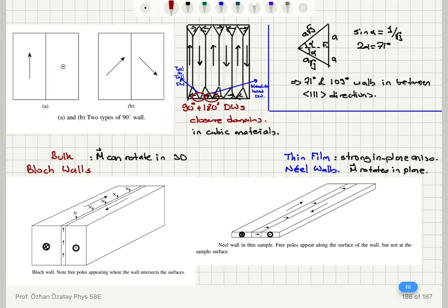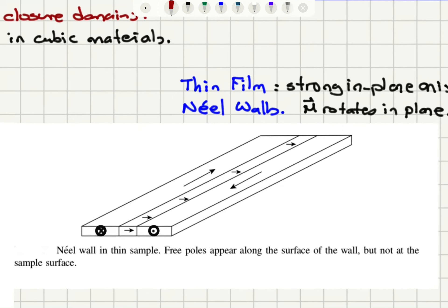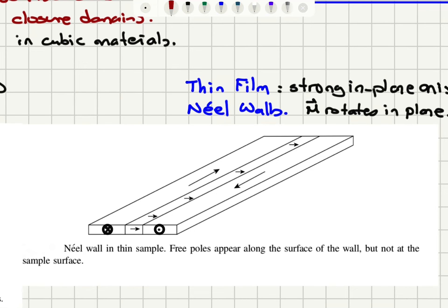On the other hand, in thin films we have strong in-plane anisotropy. Therefore the domain wall has to have its moments lying in the plane of the film, and that's what happens in a Néel wall. For example, the free poles will appear along the surface of the wall but not at the sample surface.